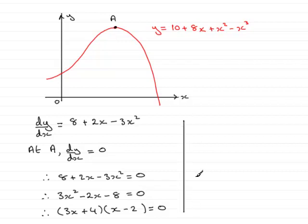All we need to do now is solve this. Each of the two factors must equal 0. So 3x plus 4 equals 0 or x minus 2 equals 0. This first factor leads to x equaling minus 4 thirds, and the second factor leads to x equals 2.